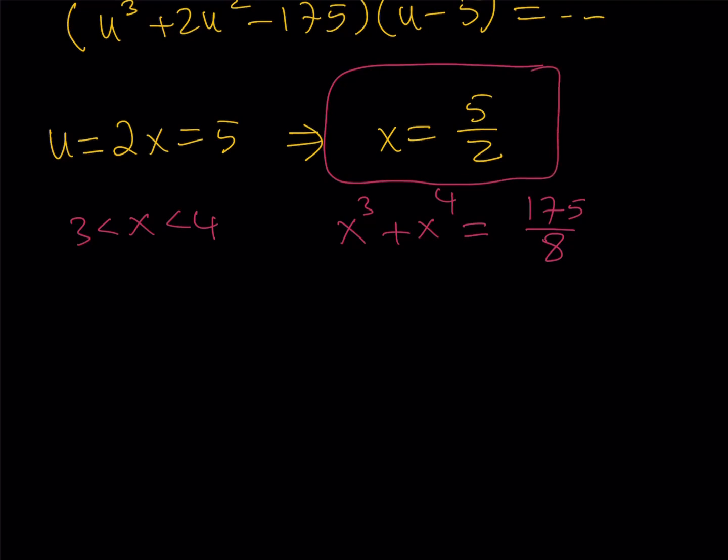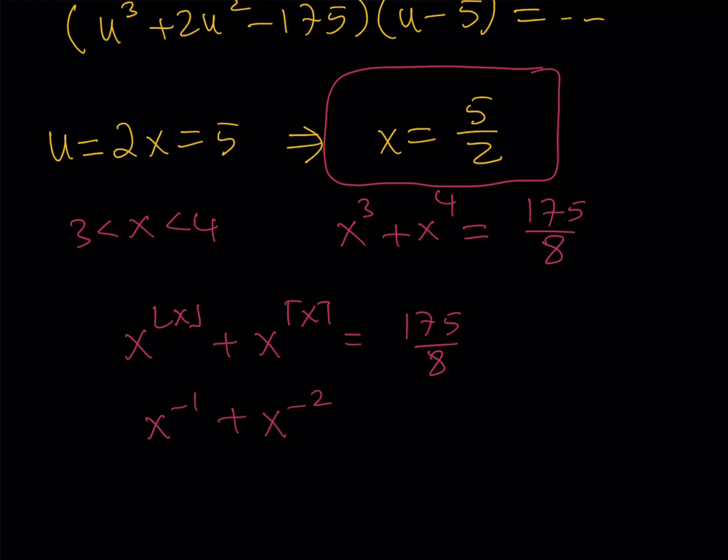Well, we didn't check the negatives, right? Let's go ahead and check them out. Well, if x becomes negative, notice that we have x to the power floor of x plus x to the power ceiling of x, and that equals 175 over 8. Obviously, when x is negative, you're going to be getting powers like x to the power of negative 1, x to the power of negative 2, negative 3, so on and so forth. So this is going to become like a reciprocal equation.